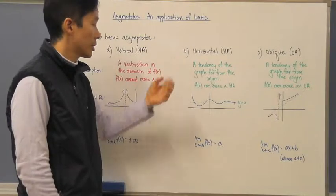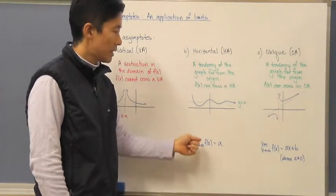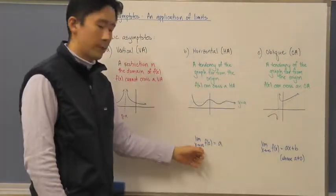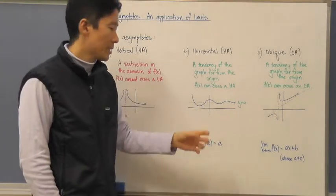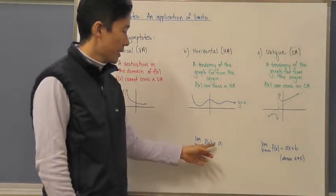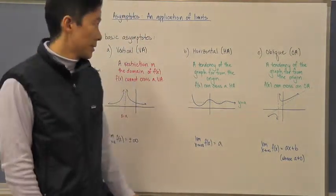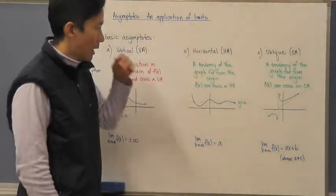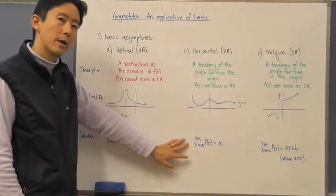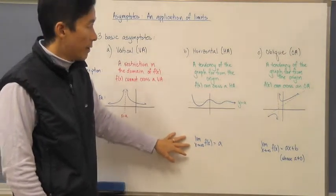From a calculus perspective, we write this as: the limit as x approaches infinity of f of x is equal to a. This could be positive or negative infinity, but generally we say x is approaching infinity and f of x approaches the y value a. That is the graphical representation and algebraic limit notation for a horizontal asymptote.